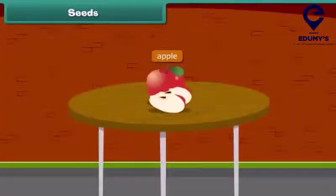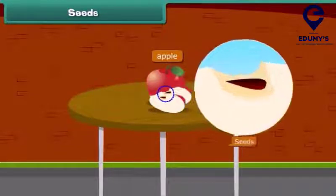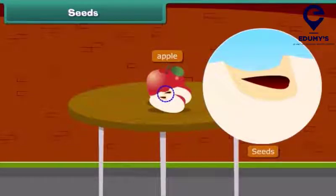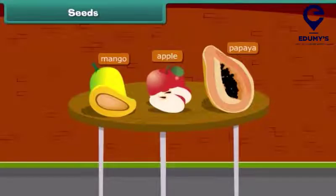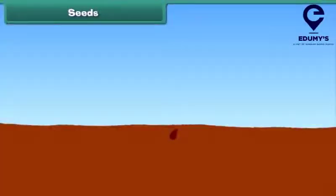When we cut an apple, what do we see at the center? Yes, absolutely right — we see small dark brown seeds. Other fruits also have seeds inside them, such as papaya and mango. Do you know that a new plant grows from a seed?